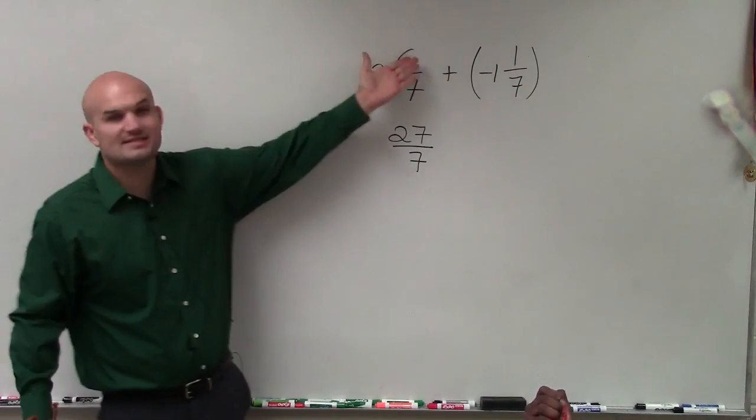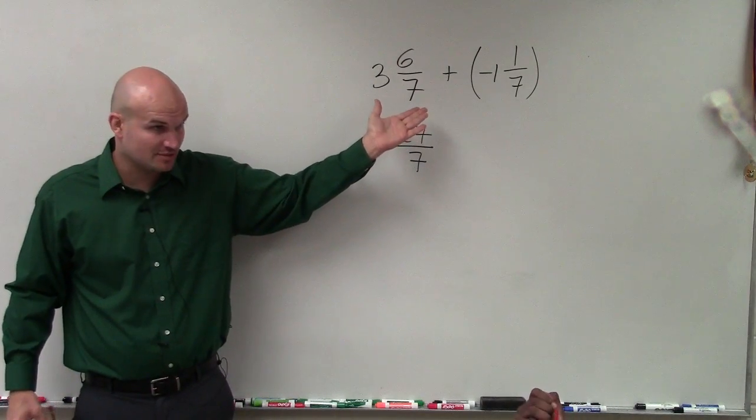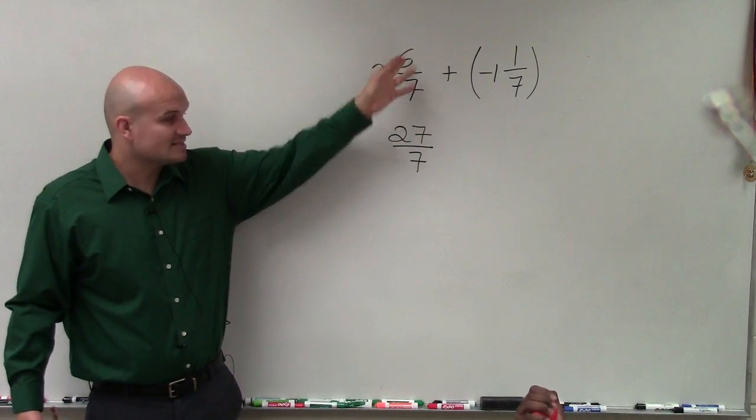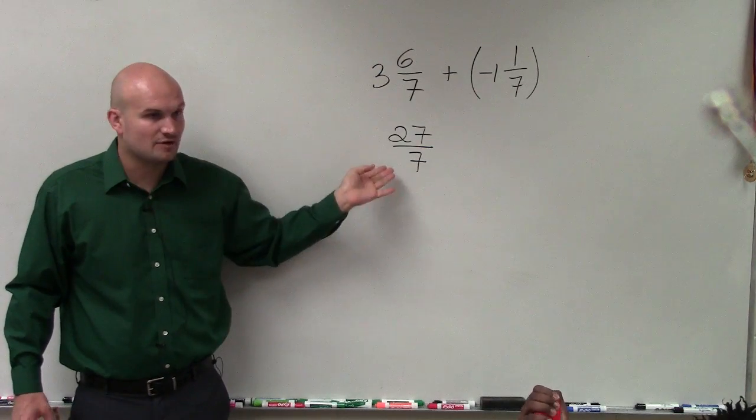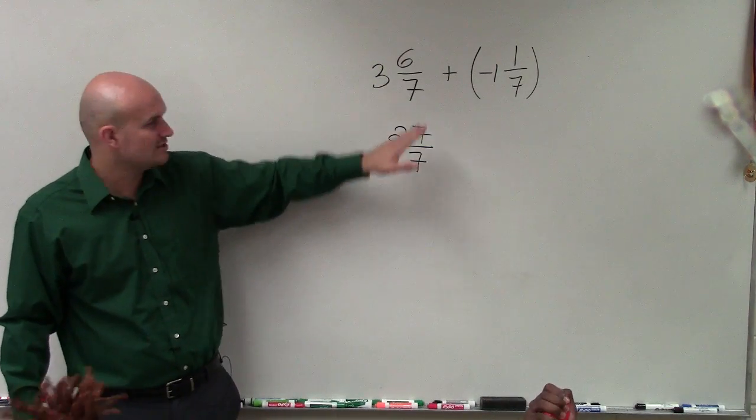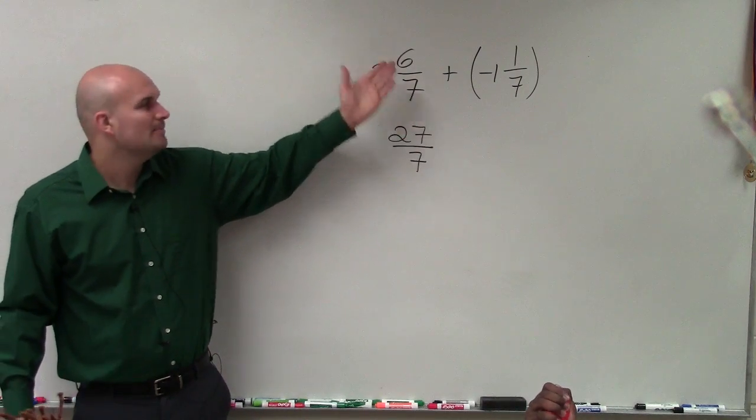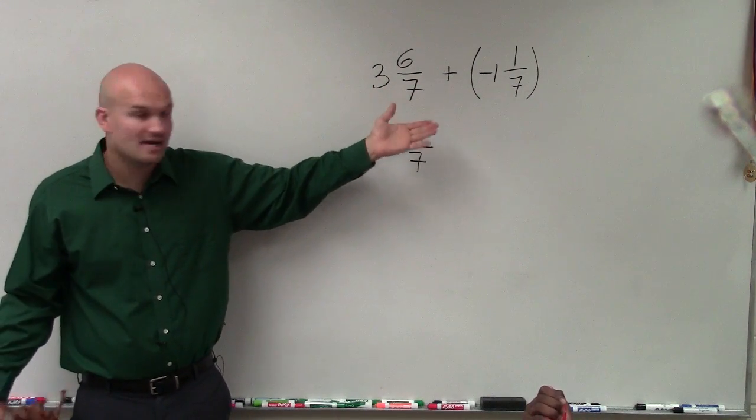So 3 and 6 sevenths, which is a mixed fraction or mixed number, we can rewrite as the improper fraction of 27 over 7, which we're always going to want to prefer. I don't even like mixed numbers at all, but in case we do have a problem that involves that, that's how you convert.